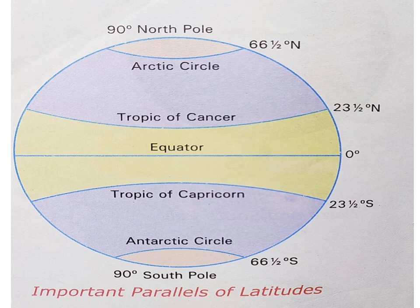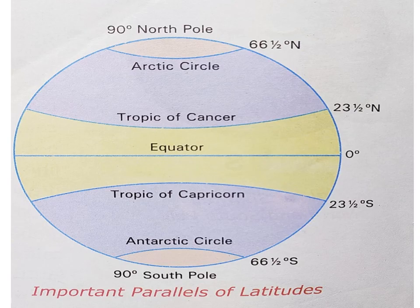The Tropic of Cancer is in the northern hemisphere at 23.5 degrees north. The Tropic of Capricorn is in the southern hemisphere at 23.5 degrees south. The Arctic Circle is in the northern hemisphere at 66.5 degrees north. The Antarctic Circle is in the southern hemisphere at 66.5 degrees south.